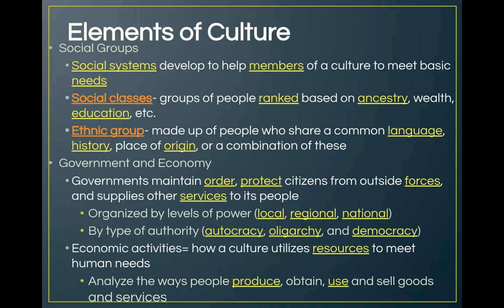As far as government and economy go, governments maintain order, protect citizens from outside forces, and supply other services like maintaining roads and canals. Those three functions were actually ideas from Adam Smith. Government is often organized by levels of power — we have a federal system with local, state or regional, and national levels. There are also types of authority: we live in a democratic system, while North Korea is an autocracy with a dictator. An oligarchy is where a small group is in charge — Venice during the Renaissance is the best example, where a group of merchants controlled the city.